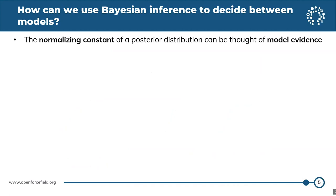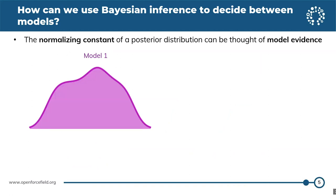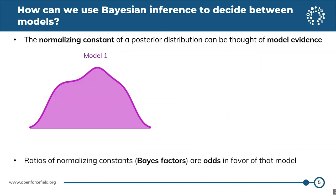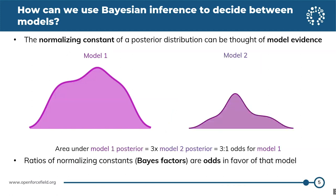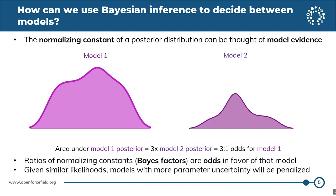If we look at the posterior distributions and integrate under the curve, we get a normalizing constant. The normalizing constant of a posterior distribution can be thought of as model evidence. By taking ratios of those normalizing constants — ratios of model evidence — you can interpret that as odds in favor of a model. For example, if one model has three times the normalizing constant of another, that's three-to-one odds in favor of that model. Models that are more uncertain or have lower prior values will be penalized.